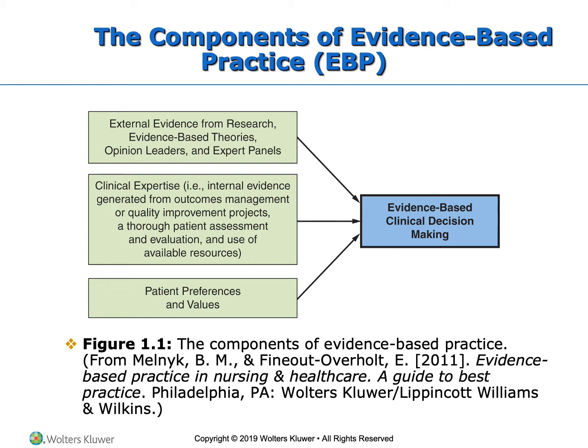These are the three pillars of what makes up EBP. The first is external evidence from research, evidence-based theories, opinion leaders, and expert panels. This is the research that you will be doing through your literature reviews. The second is clinical expertise — examples might include internal evidence generated from outcomes management or quality improvement projects, a thorough patient assessment and evaluation, or the use of available resources at your site.